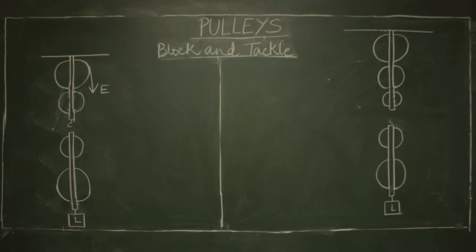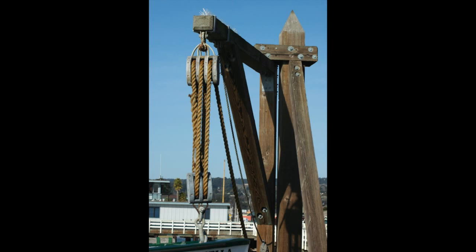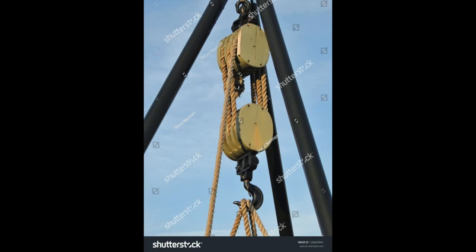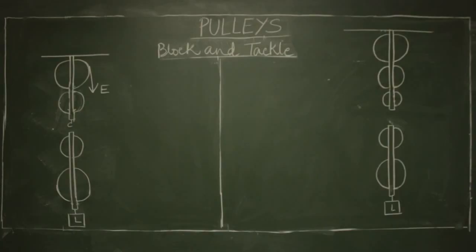This is the next topic: Block and Tackle System of Pulleys. In this system of pulleys, there are two blocks. The upper block is fixed to a rigid support, while the tackle, which is the lower block, is movable. The load is attached to the tackle. The number of pulleys in the tackle is either equal to or less than the fixed upper block. Today I will discuss two diagrams of the block and tackle system of pulleys.